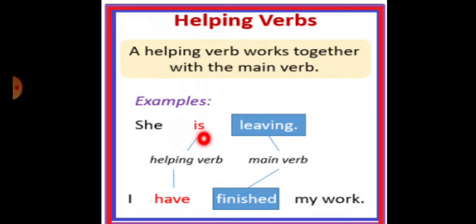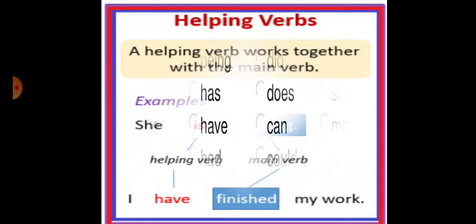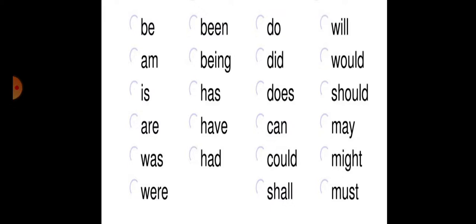Second example, look at this: I have finished my work. Have is the helping verb, and it is helping the main verb finished. I hope you got it. Now you will be able to understand how the different helping verbs are used in English language.